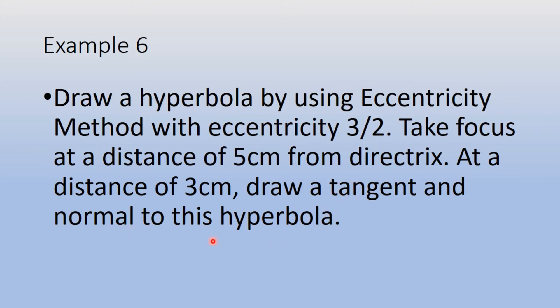We have to draw the hyperbola first, then draw a tangent — a line which touches the curve at only one point — and a normal, which is a line at 90 degrees perpendicular to the tangent. We will see how to draw this on the drawing sheet.